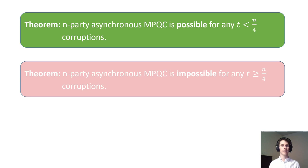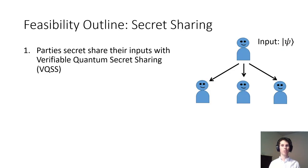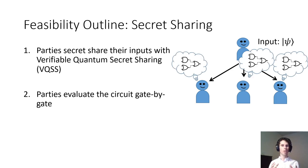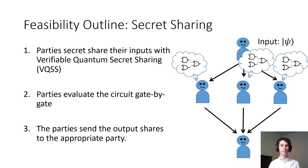I'll start by discussing the feasibility result. Our protocol follows the traditional secret sharing-based outline. First, each party shares their input using a protocol called verifiable quantum secret sharing. Verifiable quantum secret sharing ensures that the parties hold a well-formed secret sharing at the end of the protocol, or else they all know that the dealer tried to cheat. Once valid shares are distributed, the parties can evaluate the circuit gate by gate using standard techniques. Finally, the parties send the output shares to the appropriate party. Similarly to prior work, the primary technical difficulty is in constructing verifiable quantum secret sharing.